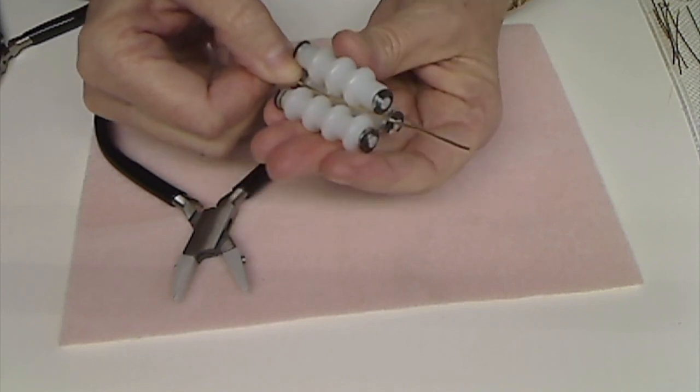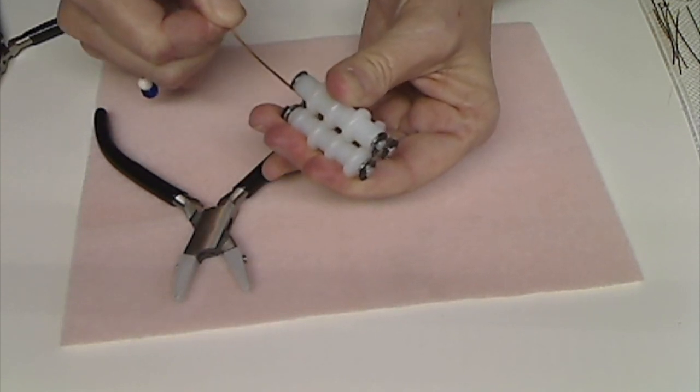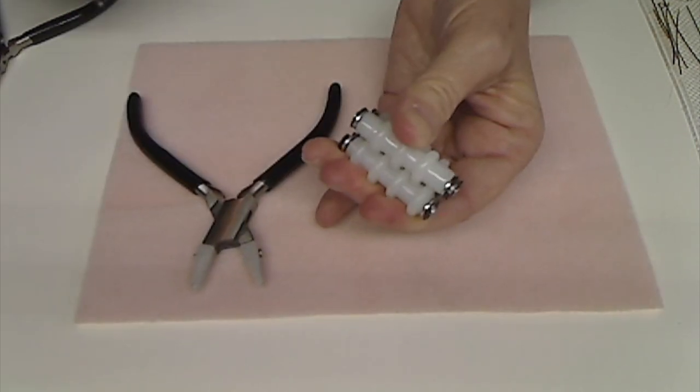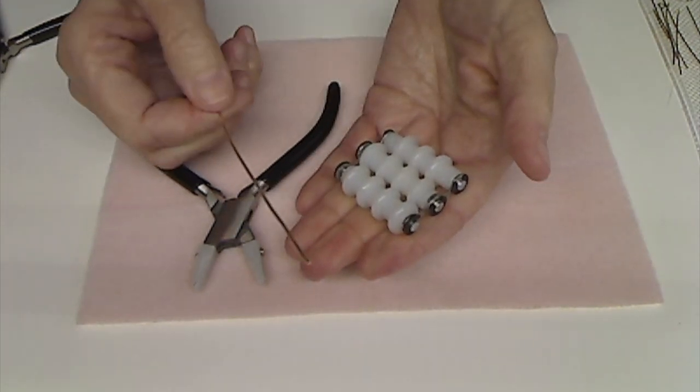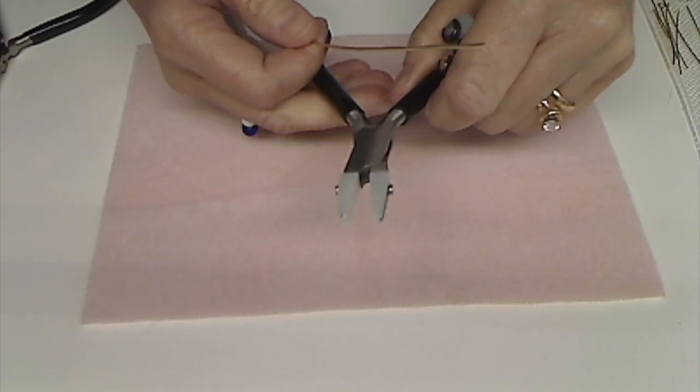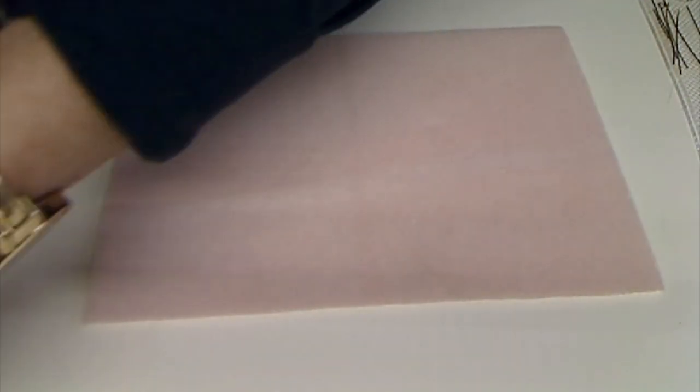Sometimes this one works better, and sometimes this one works better. And you're probably thinking, why am I going to straighten wire? But wires get bent a lot in jewelry making, so it's nice to have these two things to help you do that, to straighten your wire.